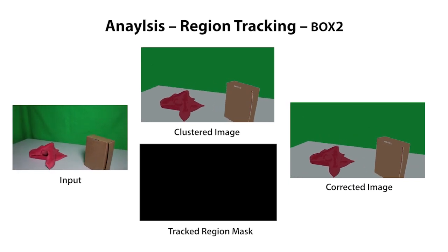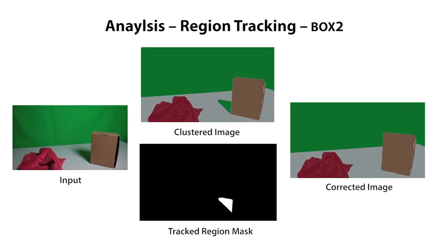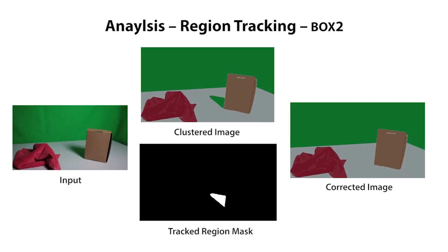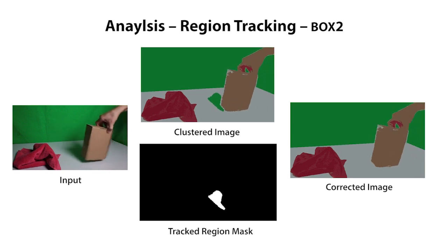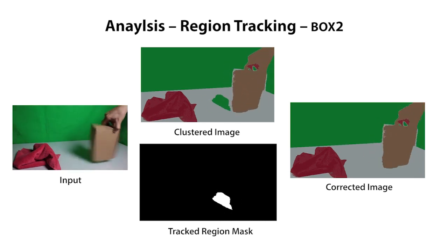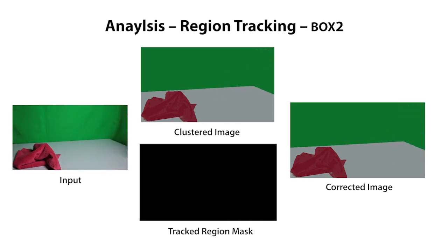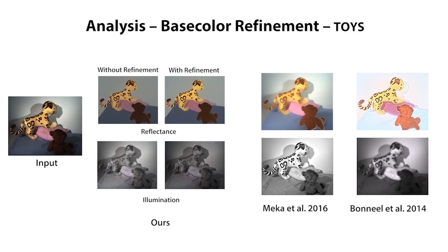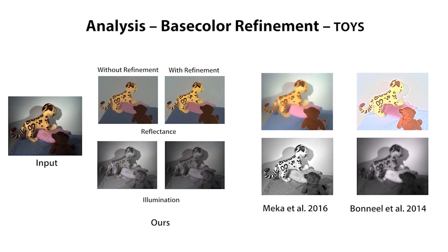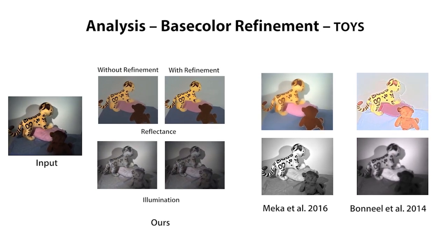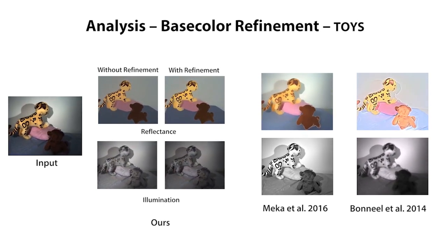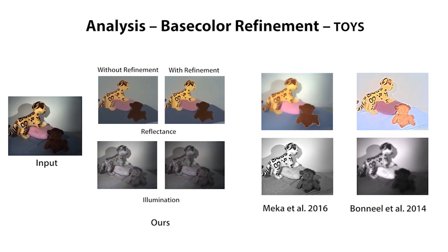If the region disappears due to occlusion, the user places another click when the region reappears. The region is then robustly tracked even in the presence of strong motion. We now analyze our base color refinement. The refined base colors result in a significantly brighter reflectance and more uniform illumination. This prevents the reflectance from leaking into the illumination estimate.